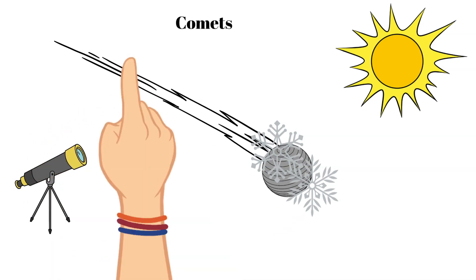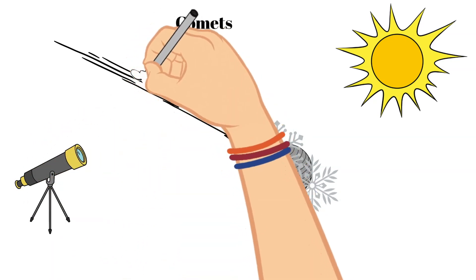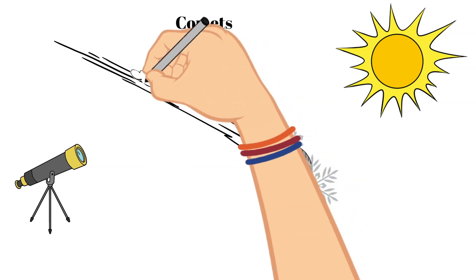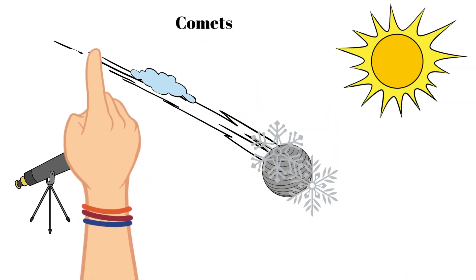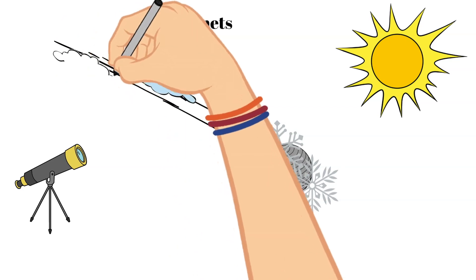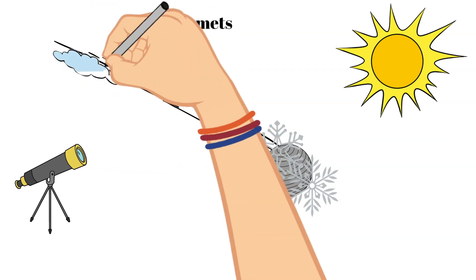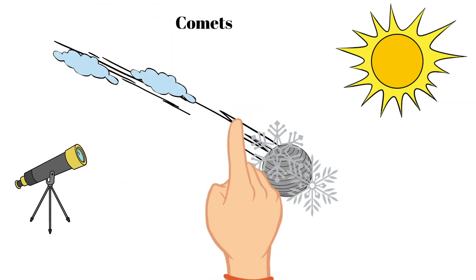This cloud that is formed from the ice and dust vaporizing is called a coma. The coma is then lit by the sun, so this beautiful bright tail is visible.